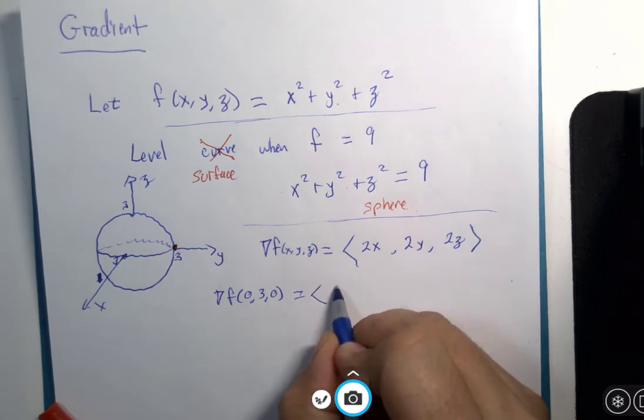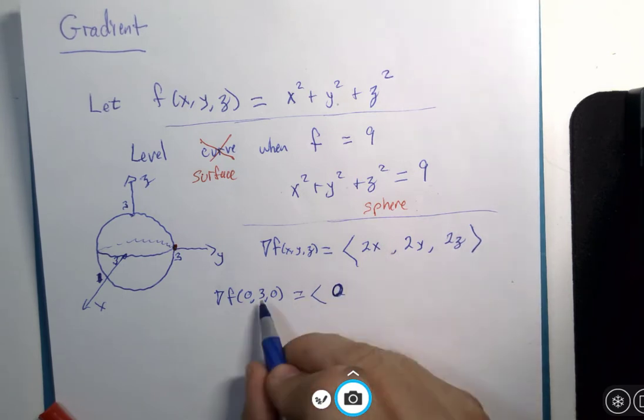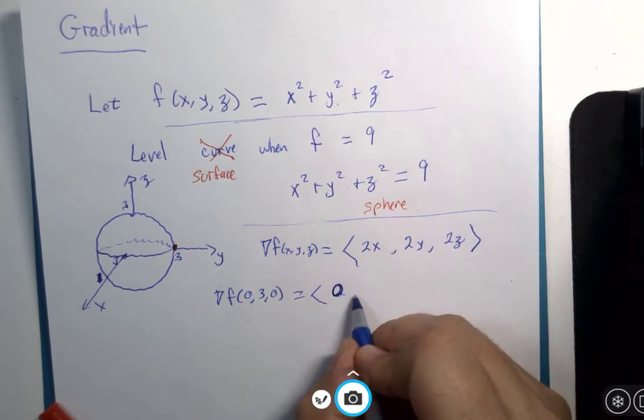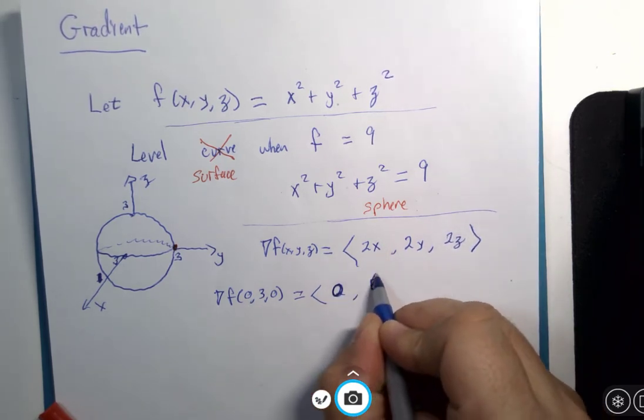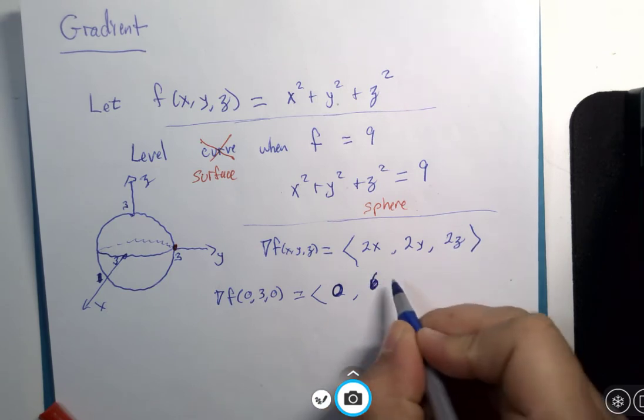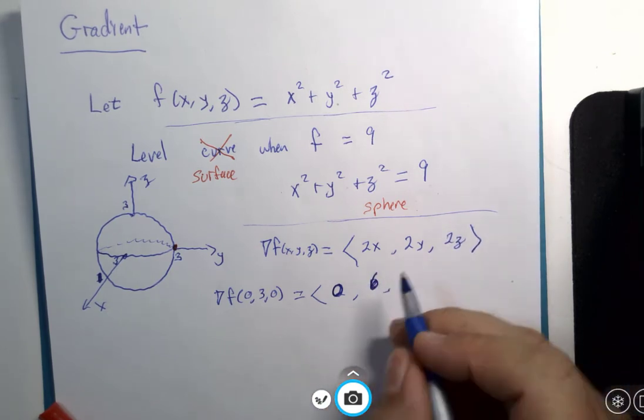The vector would be 0, because 2 times 0 is 0. 2 times 3 is 6. I still want to write a 2 down, apparently. And 2 times 0 is 0.